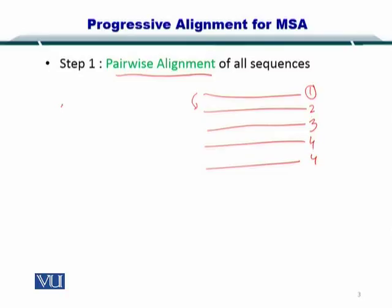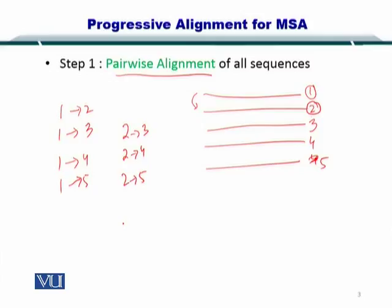So you will be aligning 1 with 2, 1 with 3, 1 with 4, and 1 with 5. In this way, sequence 2 will also be aligned with all other sequences, and then this process will continue until all the sequence alignment combinations are created.